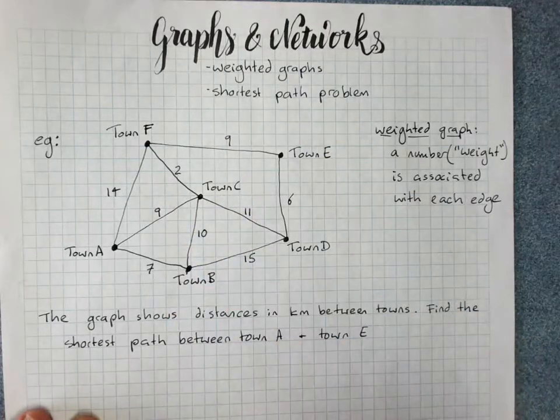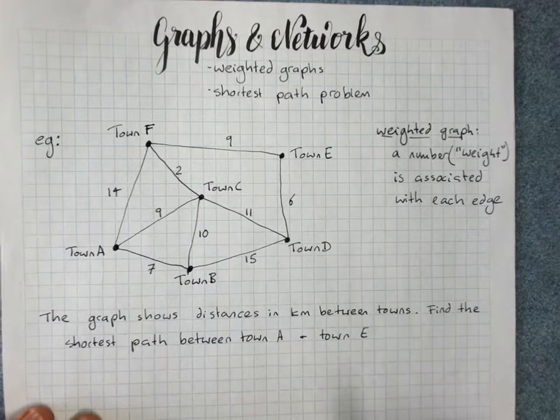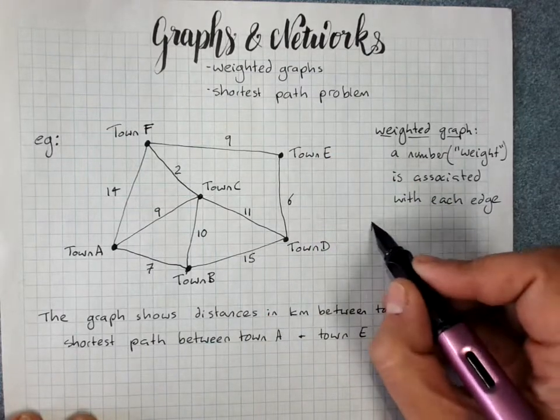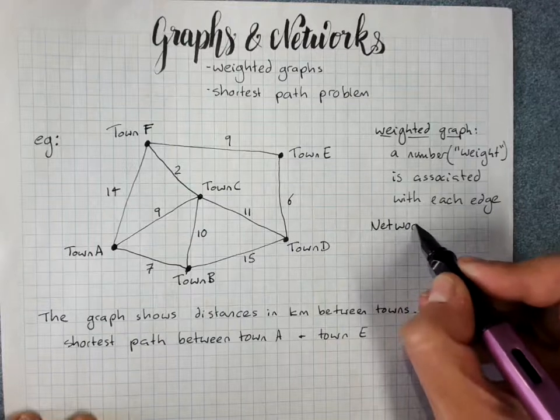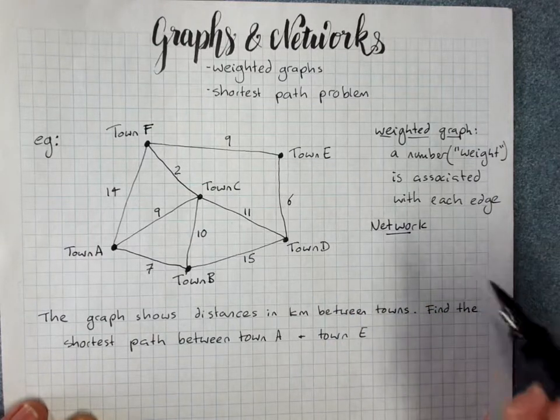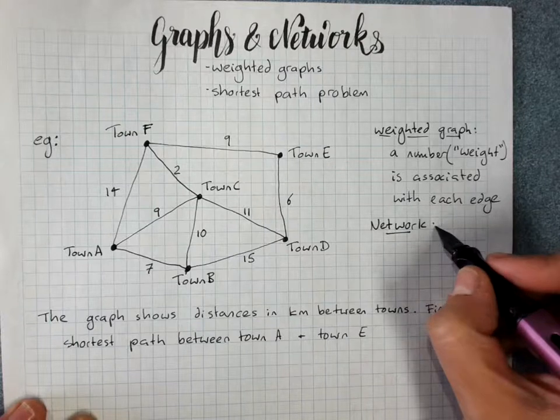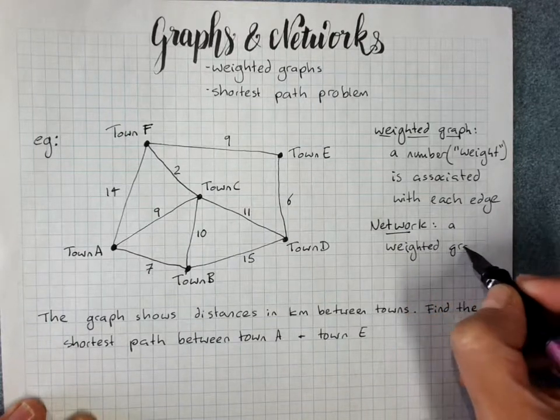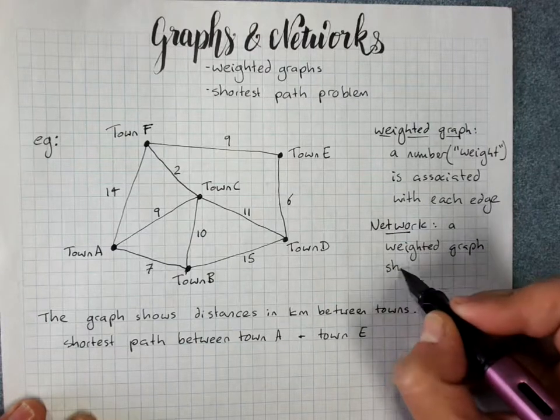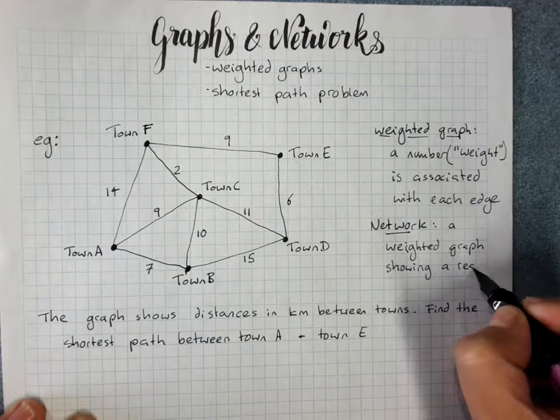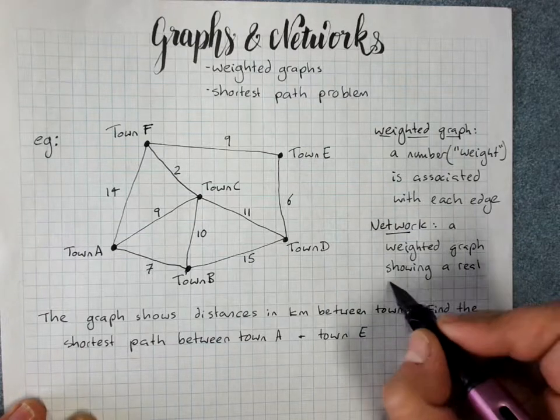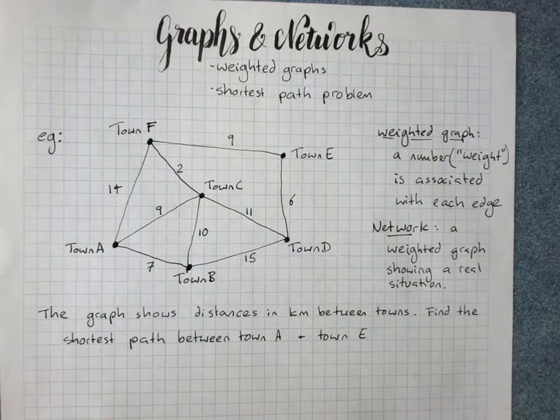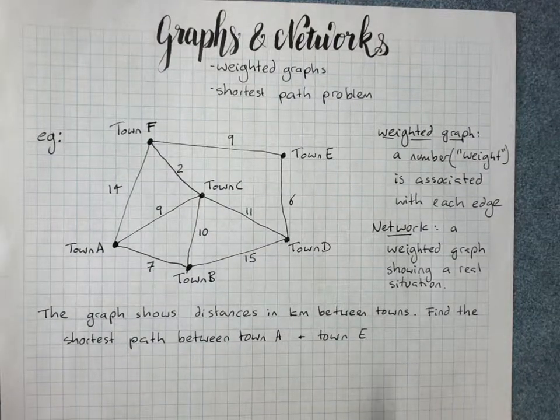Now I keep talking about graphs and networks. A network is a particular sort of graph, which is a weighted graph showing a real-life problem. That's why we keep talking about graphs and networks - a network is a specific type of graph.